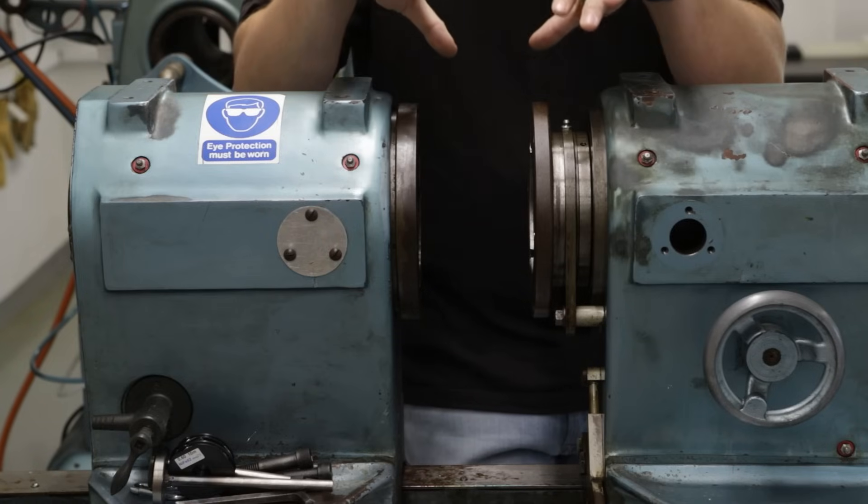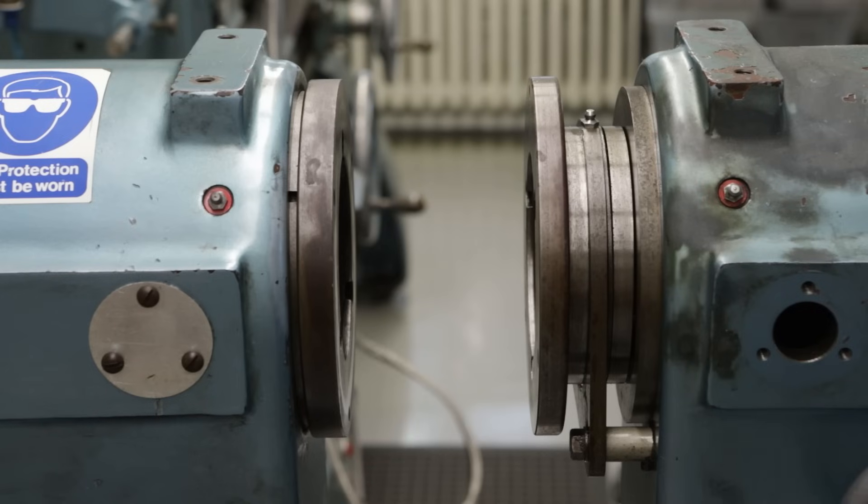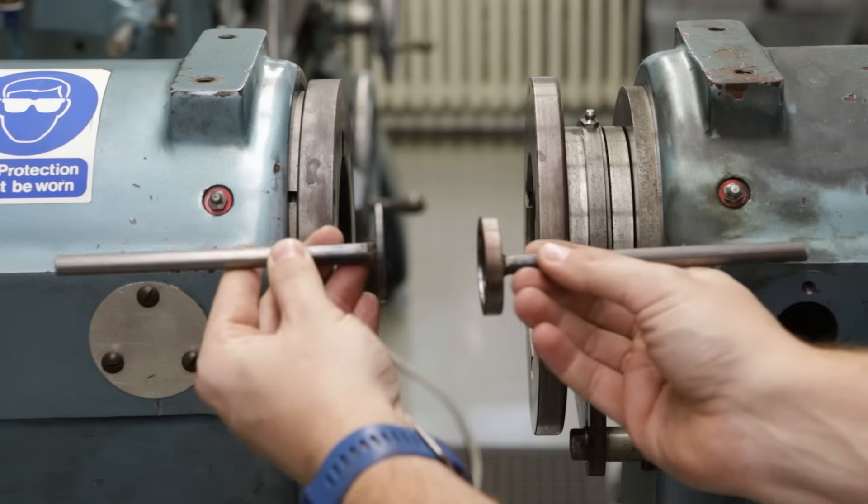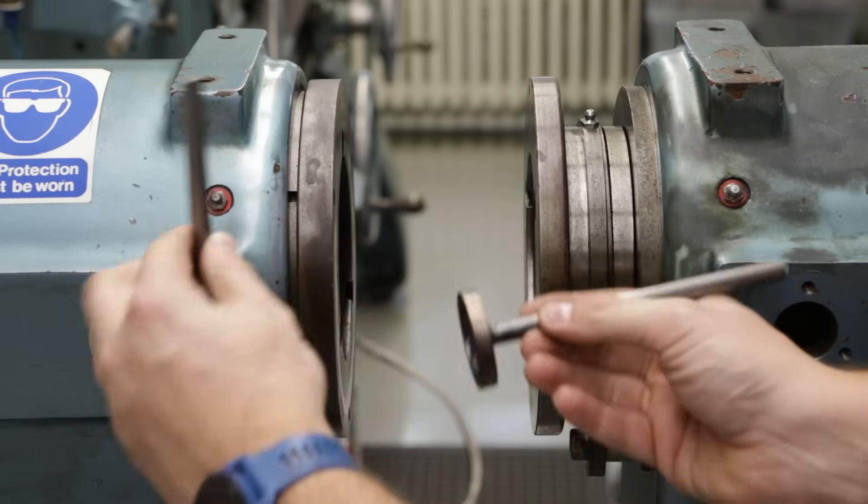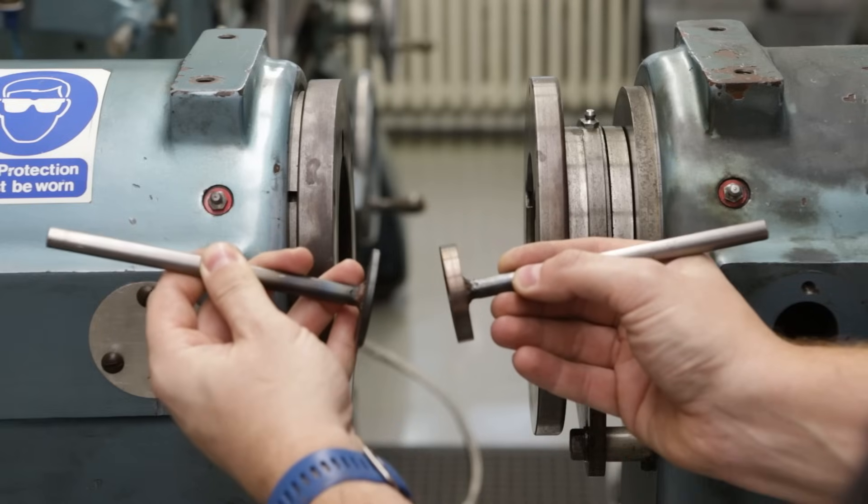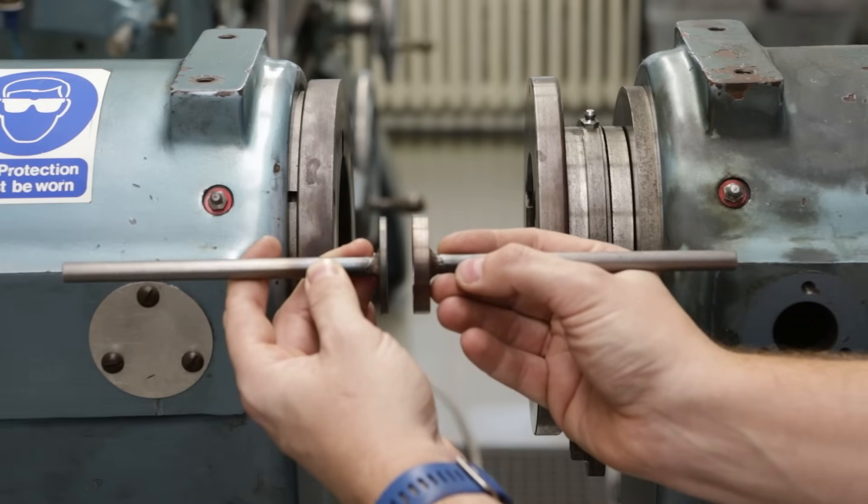Before making the molds I need to find out if they run reasonably true. First problem that can appear is that the face plates of the spindles will not be parallel to each other, so they will be under an angle. Another possible problem is that the axis of the spindles are shifted.